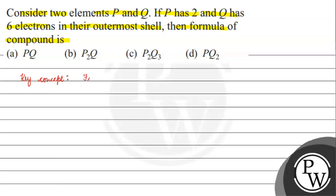Formation of an ionic compound. So, what are we saying? P has two electrons in its outermost shell, and Q has six electrons in its outermost shell.